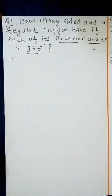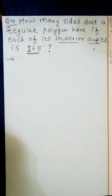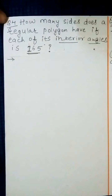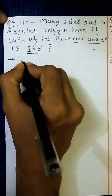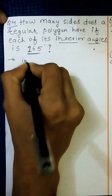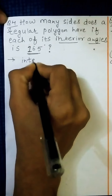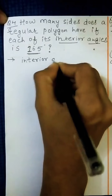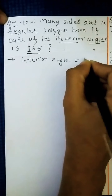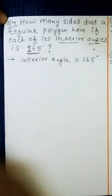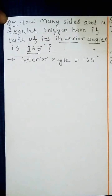In the previous video we have done questions 1, 2, and 3. This is a similar type of sum, but in those questions the exterior angle was given and we have the formula for exterior angle. Here, the interior angle is given to us, so we will write that first.